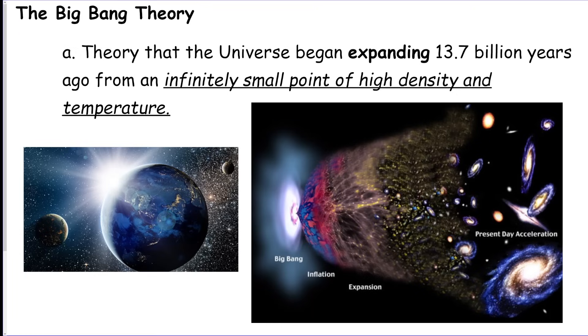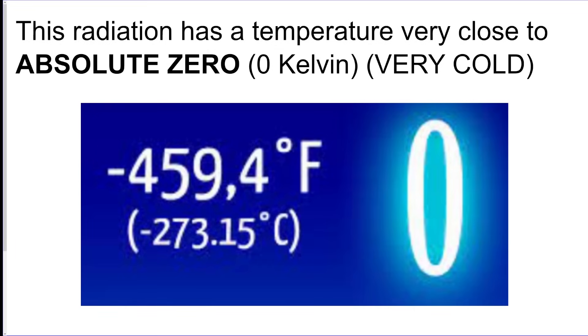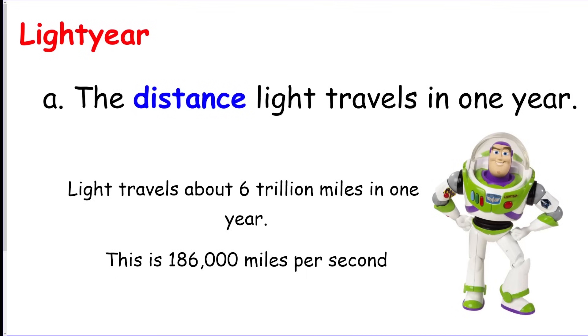The universe started and started expanding 13.7 billion years ago from an infinitely small point of high density and temperature. We got some evidence that we need to know. How do we know the Big Bang happened? There's a few pieces of evidence that we know. The first one is cosmic microwave background radiation that we can detect. We also know the temperature of cosmic microwave background is very cold, extremely close to absolute zero but not quite absolute zero. We have a light year, it's the distance that light can travel in one year, and this is going to lead us into our second piece of evidence.